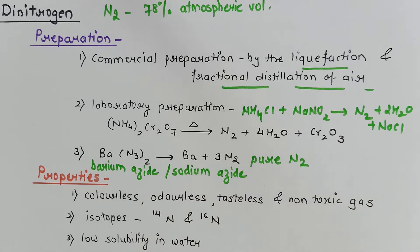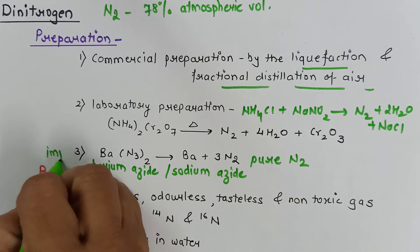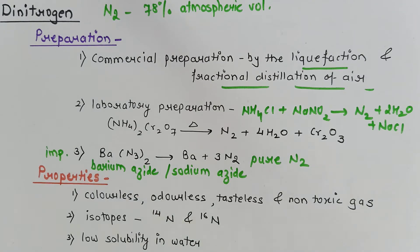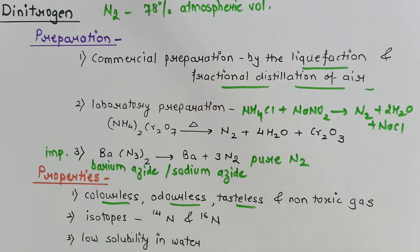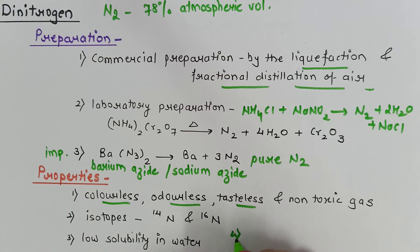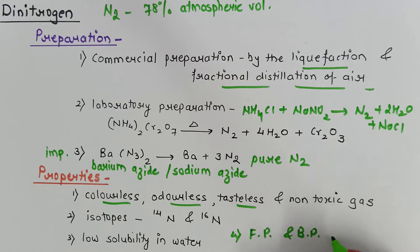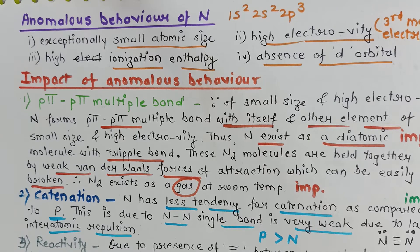Now, what are the properties of nitrogen? It is a colorless, odorless, tasteless, and non-toxic gas. It exists in two types of isotopes: N14 and N15. It has very low solubility in water, and its freezing point and boiling point are also low.